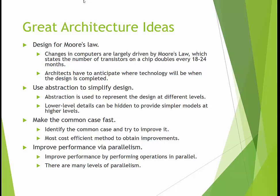Now we're going to talk about great architecture ideas — remember these. First, design for Moore's Law: Moore's Law says the number of transistors in a chip doubles every 18 to 24 months. This is beginning to slow down a little bit. When you design something, you have to anticipate the change in technology in your design. Second, use abstraction to simplify design and layer it. Abstractions are used to represent different levels of the design; lower-level details can be hidden to provide simple models and allow for modification. Third, make the common case fast — think of improving a for loop. You identify the common case, the one done over and over again, and make it efficient. It's often the most cost-efficient method to obtain improvements.